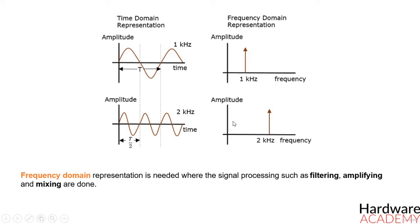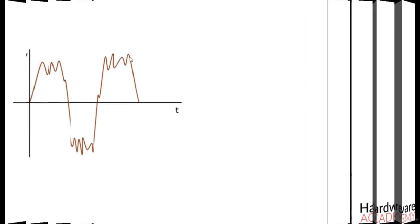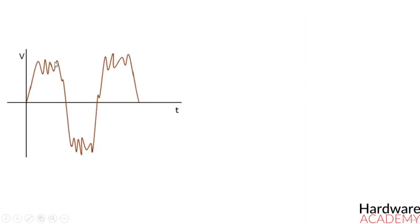For instance, if a signal such as the following is considered, it is understood that noise is present in it. The frequency of the original signal may be 1kHz, but the noise of certain frequency which corrupts this signal is unknown.